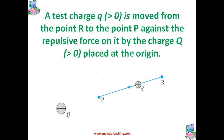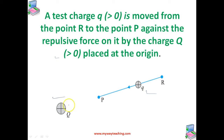Consider an electrostatic field E due to some charge configuration. For simplicity, consider the field E due to charge Q placed at the origin. We bring a test charge q from a point R to a point P against the repulsive force on it due to charge Q. This will happen if Q and q are both positive or both negative.